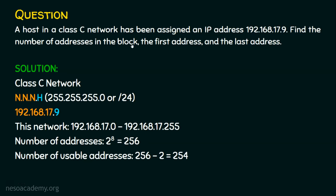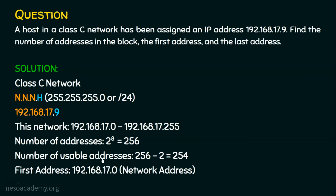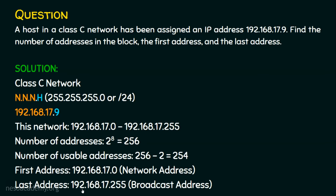Now let's find the first and last addresses in this network. Since the network starts with 192.168.17, the first address is 192.168.17.0, which is the network address. The last address is 192.168.17.255, which is the broadcast address.